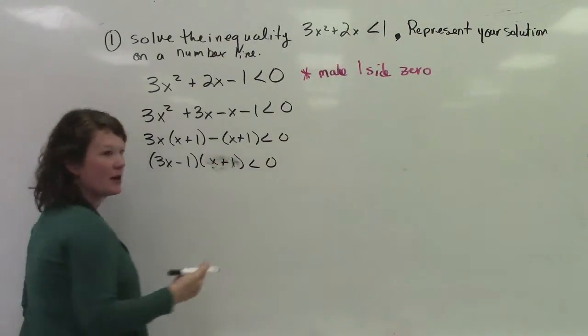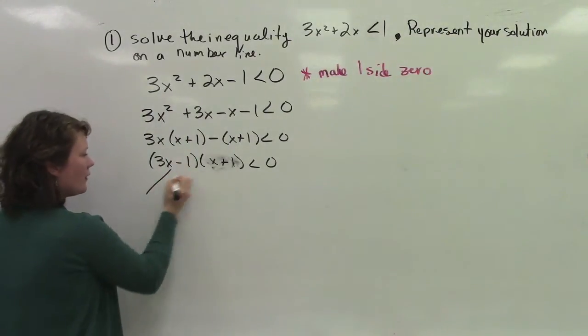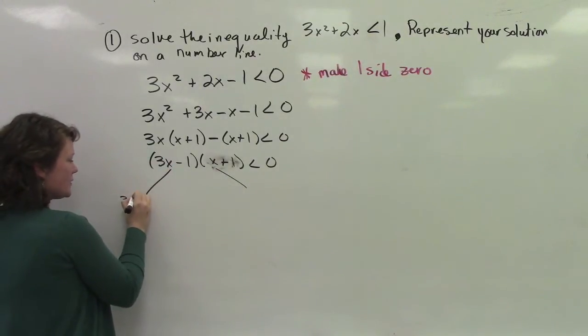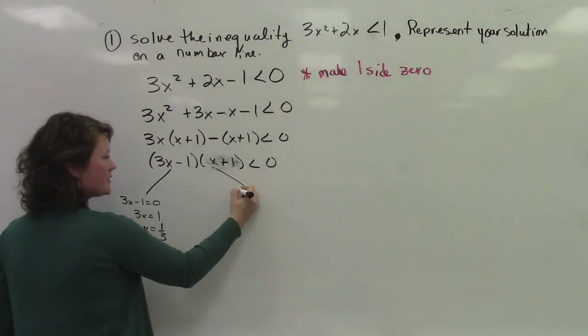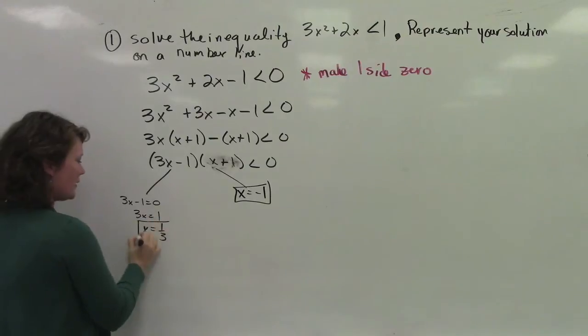So our two critical values are where this actually equals 0. So when this equals 0, 3x minus 1 equals 0, 3x equals 1, x equals 1 third. This one right here is just simply x equaling negative 1. So our two critical points are here.